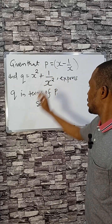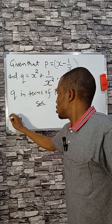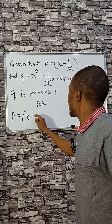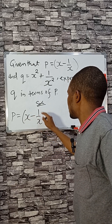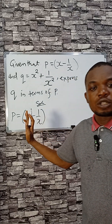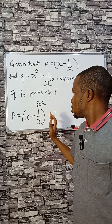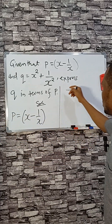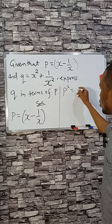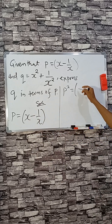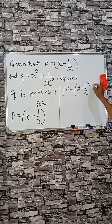Now let's start. We have p equals x minus one over x. If we take the square of both sides, that means p squared equals x minus one over x, all squared.